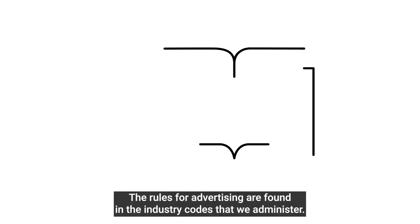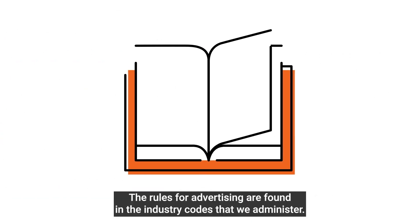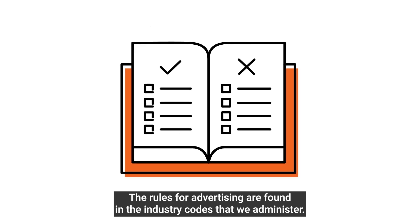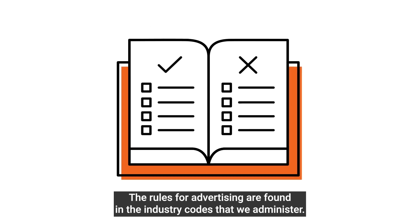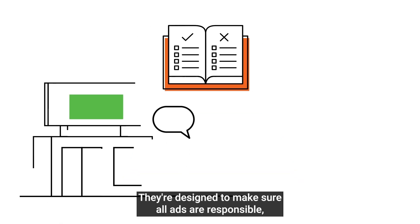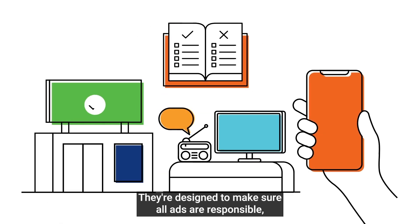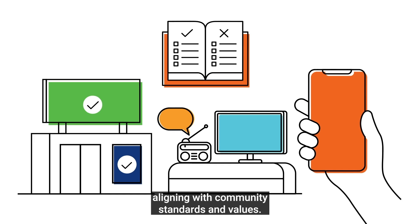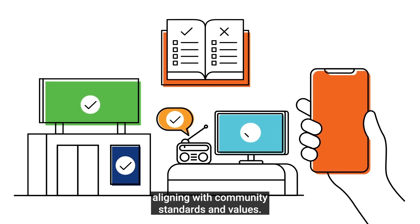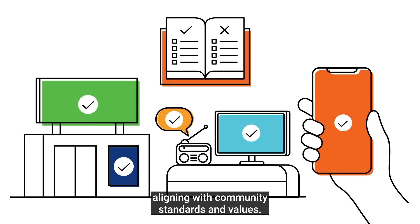The rules for advertising are found in the industry codes that we administer. They're designed to make sure all ads are responsible, aligning with community standards and values.